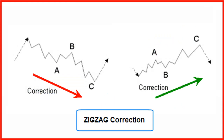The zigzag pattern is the most common correction structure. A zigzag can consist of one zigzag, a double zigzag, or, rarely, a triple zigzag. The zigzag belongs to the family of sharp corrections.